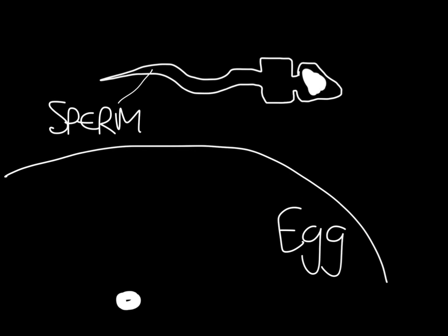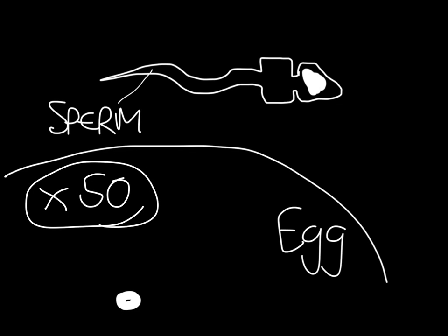The egg is about 50 times bigger than the sperm. Both of them have a nucleus — there it is in the sperm, there it is in the egg. The nucleus holds all the genetic information in the form of DNA — important stuff here.